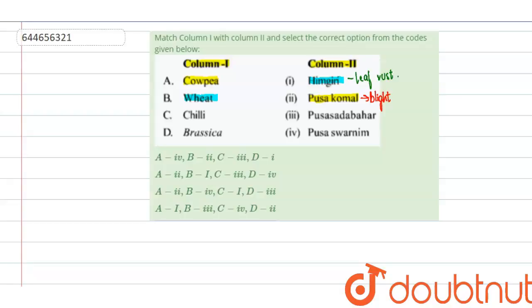Now the third one, chili. The variety of chili that was developed to be resistant to chili mosaic virus is Pusasadabahar. This variety, as I already told you, will be resistant to chili mosaic virus.